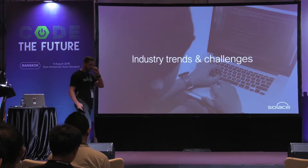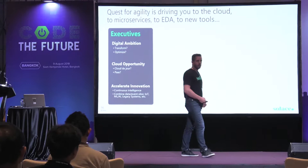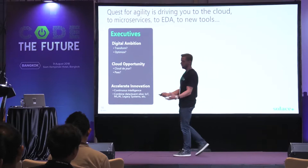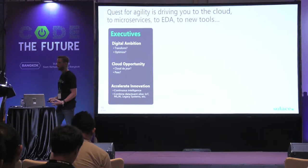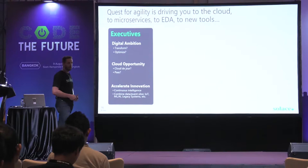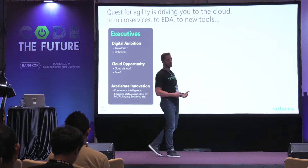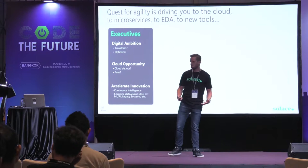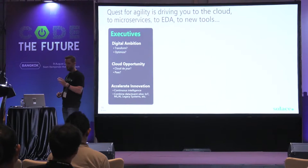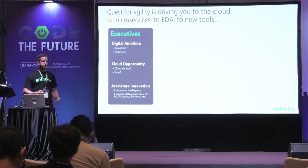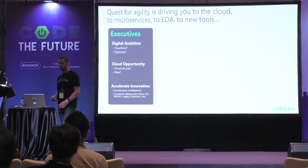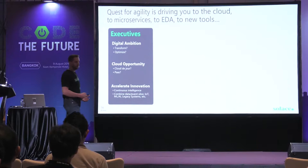Industry trends and challenges: we decided we want to move to the cloud, adopt an event-driven architecture, move to microservices. From an executive level — why? To improve the responsiveness and agility of my business, to monetize the information I'm generating. Which cloud? Maybe Google Cloud. Which PaaS? Obviously Pivotal, to accelerate innovation.